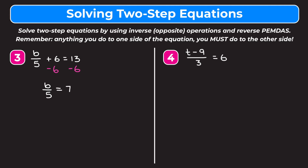Now to get rid of this 5 that's being divided, we do the inverse operation, which is multiplication. We multiply both sides by 5. On the left, the 5s cancel out and go to 1, leaving us with 1b, which is the same as b. On the right, 7 times 5 is 35. So we get that b is equal to 35. Now we go and check our answer.